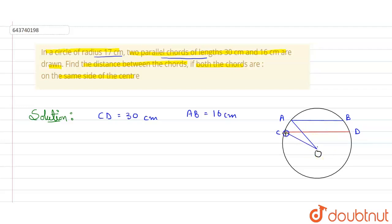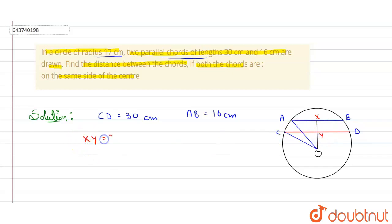We have to find the distance between the chords. Suppose the foot of the perpendicular from O to AB is point X, and to CD is point Y. We have to find the value of XY. XY will be equal to OX minus OY.